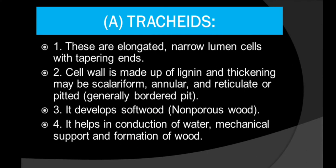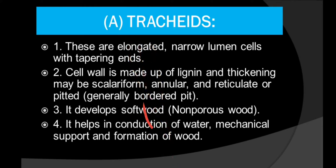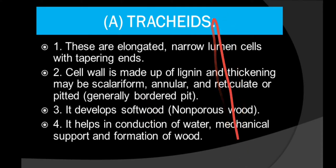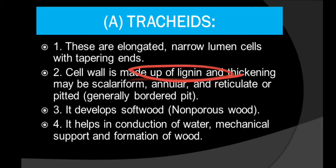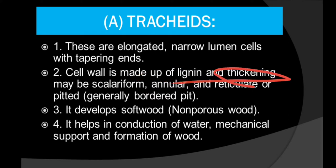First is the xylem tracheid. If you see the structure of tracheids, they are elongated with a very narrow lumen and tapering ends. The cell wall is made up of lignin. You will see lignin thickening around it, and the thickening can be scleriform, annular, reticulate, or pitted.